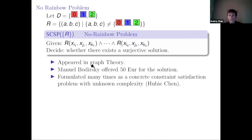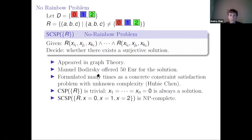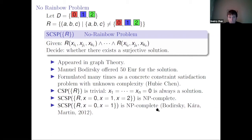Hubert Chen formulated this as a concrete CSP problem with unknown complexity and presented it many times at conferences. CSP over R with all constant relations is NP-complete. In 2012 it was proved that even with just two constant relations, surjective CSP over R is NP-complete. One of the main results of my talk is that surjective CSP over R is NP-hard, and therefore NP-complete.